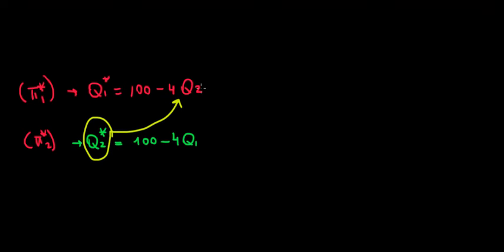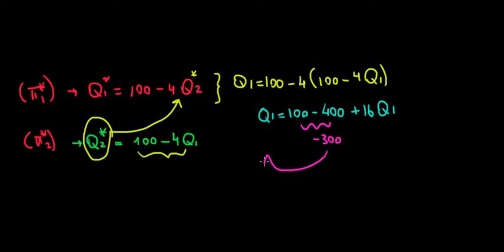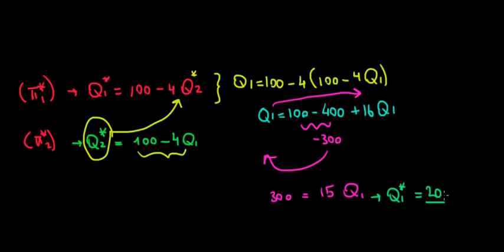We substitute Q2 into the Q1 equation. So we have Q1 = 100 - 4 × Q2, and Q2 = 100 - 4Q1. Substituting: Q1 = 100 - 4(100 - 4Q1) = 100 - 400 + 16Q1. That gives us -300 = -15Q1 on rearranging, so 300 = 15Q1. Dividing both sides by 15, Q1 = 20 units.